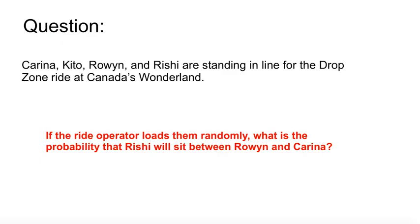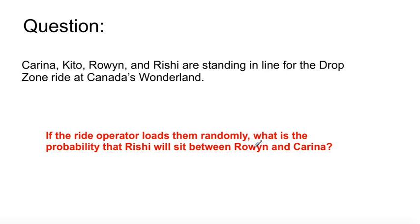The question is: Karina, Rowan, and Rishi are standing in line for the drop zone ride at Canada's Wonderland. Is the drop zone still there? Anyway, if the ride operator loads them randomly, what is the probability that Rishi will sit between Rowan and Karina? I'll tell you the answer in just a few minutes.